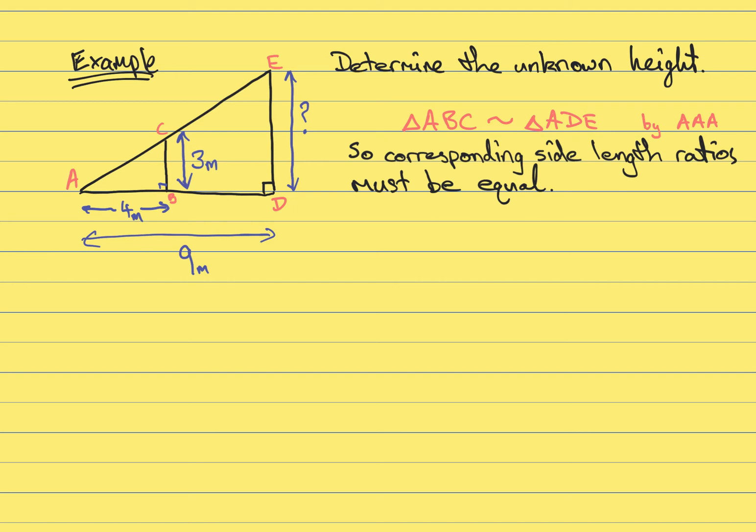If the two triangles are similar, then we know, by definition, that the corresponding side length ratios must be equal. And a particular example of interest here is that the ratio of the base of ABC and ADE, 4 over 9, must be equal to the ratio of this side length, 3, to the unknown side length. So we can write that AB over AD must be equal to BC over DE.